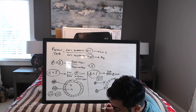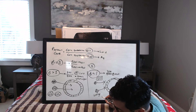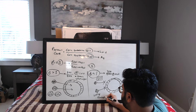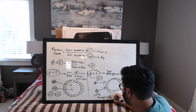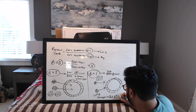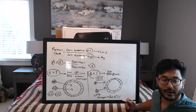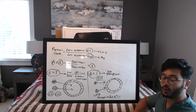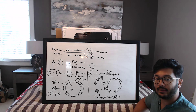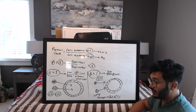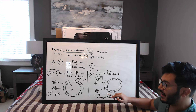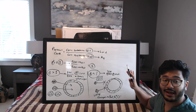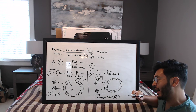Molecules that can't cross the membrane tend to be large molecules or charged molecules, such as sodium, potassium, and chloride. These need some kind of transporter, ion channel, or active transport mechanism to get through. Small uncharged molecules can freely diffuse, while large or charged ones cannot.